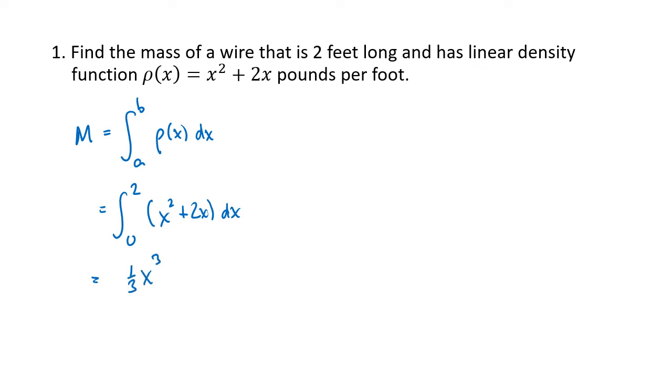Antiderivative of x squared is 1/3 x cubed. Antiderivative of 2x is x squared. We're going to plug in 2, we're going to plug in 0 and subtract. So we get 1/3 times 2 cubed plus 2 squared minus 1/3 times 0 cubed plus 0 squared. This is all 0, and so this is going to work out to be 20 over 3. Our density was pounds per foot, so our mass is going to be in pounds.